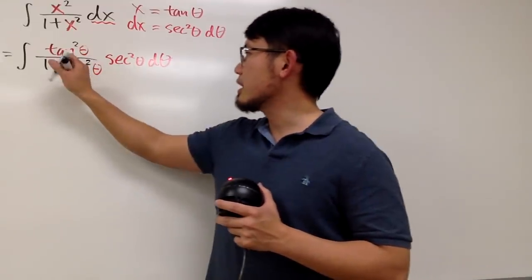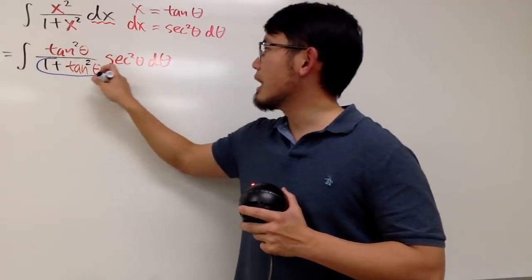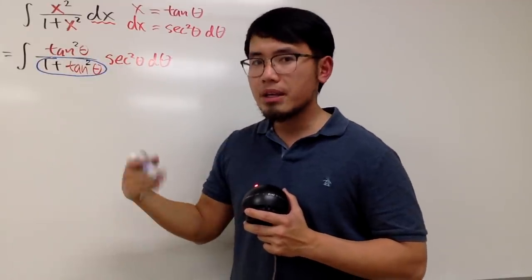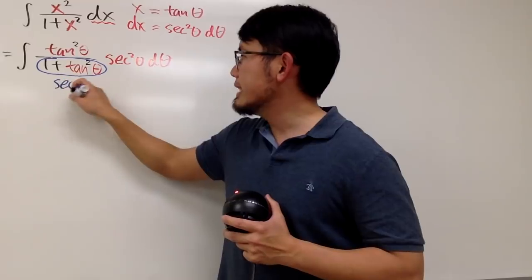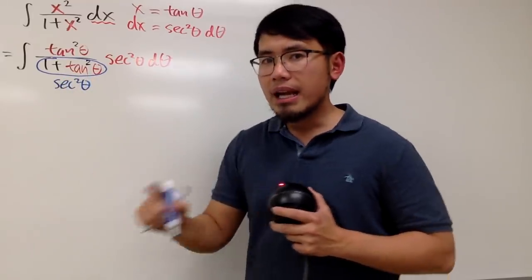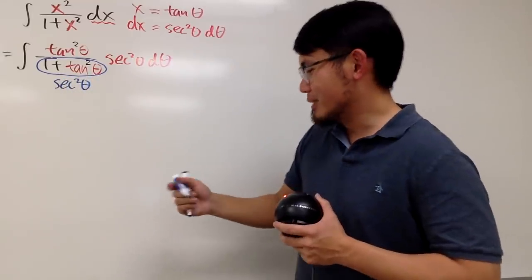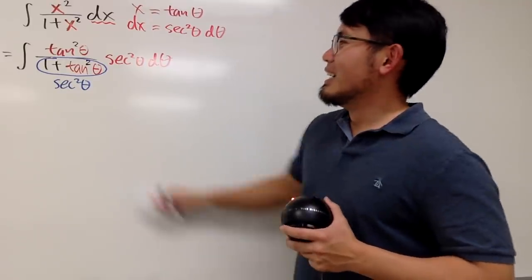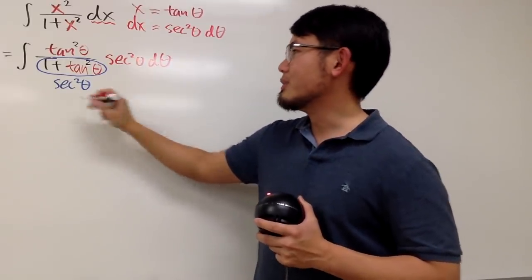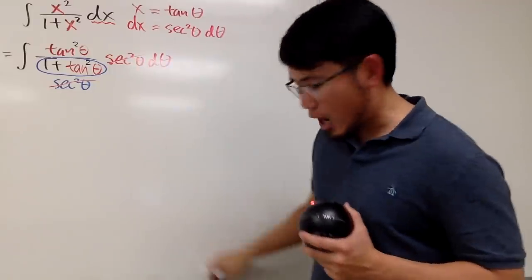And as you can see, as we discussed earlier, 1 plus tangent squared theta is precisely secant squared theta. And this is really nice because secant squared theta in the denominator, and we have this. They cancel each other out.